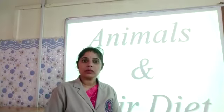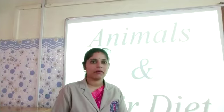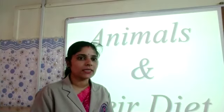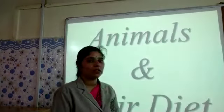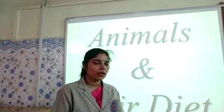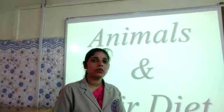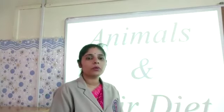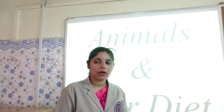You might have seen that humans also have different kinds of types. Some are vegetarian, that means they eat only fruits and vegetables, and some are non-vegetarian, that means along with fruits and vegetables they eat flesh also. And some are people who do not prefer to eat animal products.